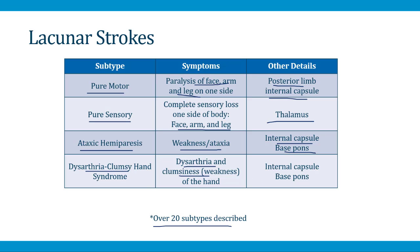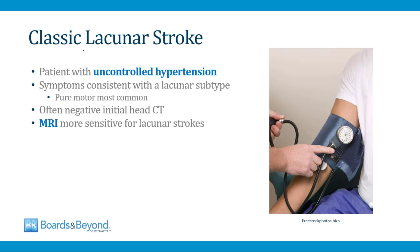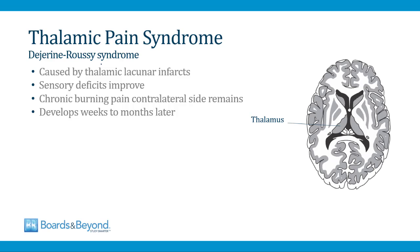The classic presentation of lacunar stroke is a patient with poorly controlled blood pressure presenting with signs consistent with one of the lacunar subtypes — the pure motor subtype being most common. The initial head CT can be negative because these are smaller strokes and CT is less sensitive for small areas of ischemia. Diffusion-weighted MRI is a more sensitive tool for picking up small areas of ischemia. Some patients with a thalamic lacunar infarct go on to develop thalamic pain syndrome — also called Dejerine-Roussy syndrome — where initial sensory deficits improve but the patient is left with chronic burning contralateral pain, developing weeks or months later.